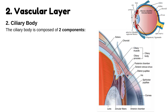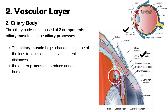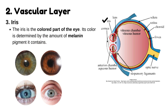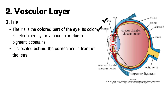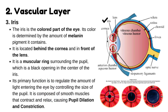The ciliary body is composed of two components: the ciliary muscle and the ciliary processes. The ciliary muscle helps change the shape of the lens to focus on objects at different distances, while the ciliary processes produce aqueous humor. The iris is the colored part of the eye, and its color is determined by the amount of melanin pigment it contains. Located behind the cornea and in front of the lens, it is a muscular ring surrounding the pupil. Its primary function is to regulate the amount of light entering the eye by controlling the size of the pupil through smooth muscles that cause dilation and constriction.